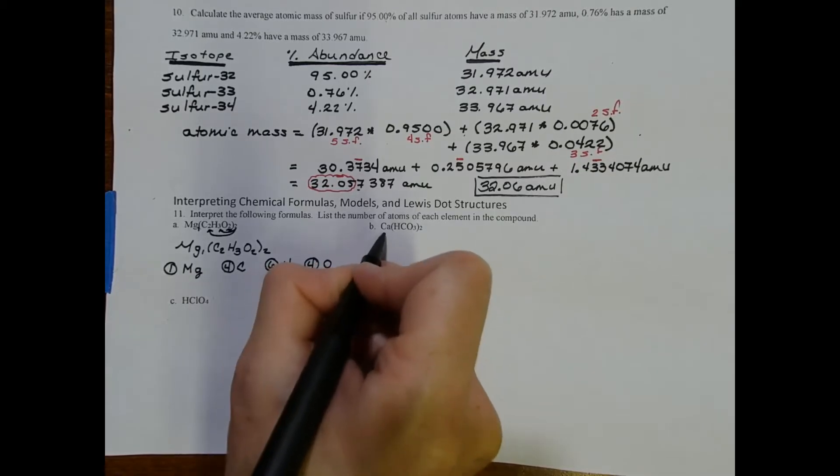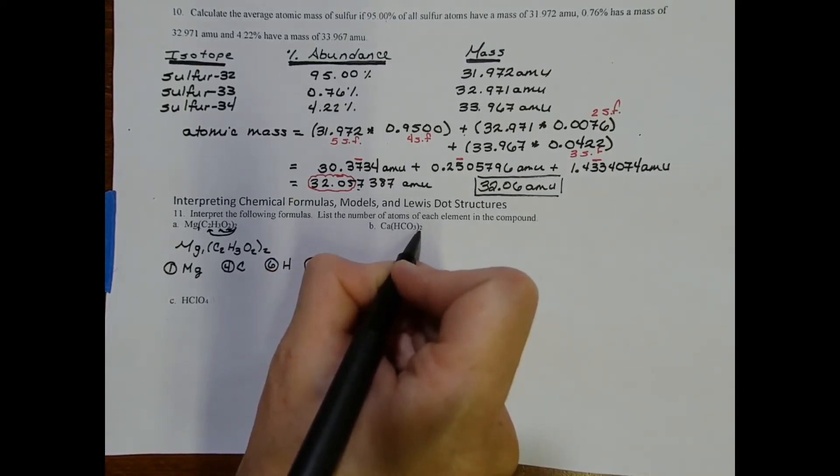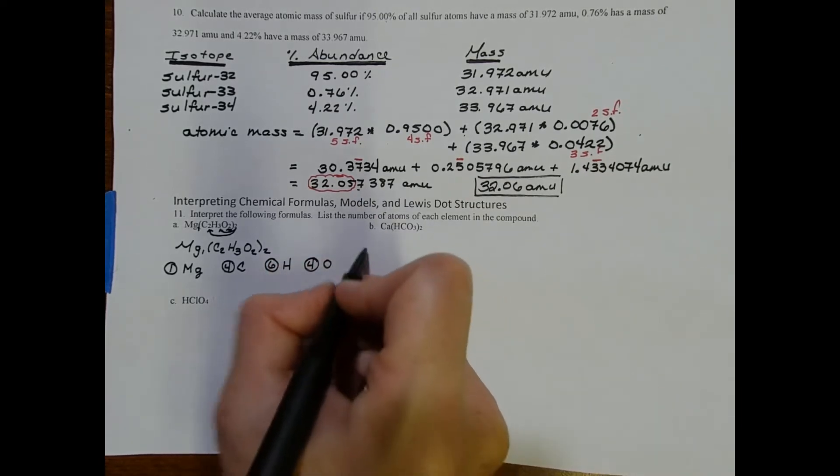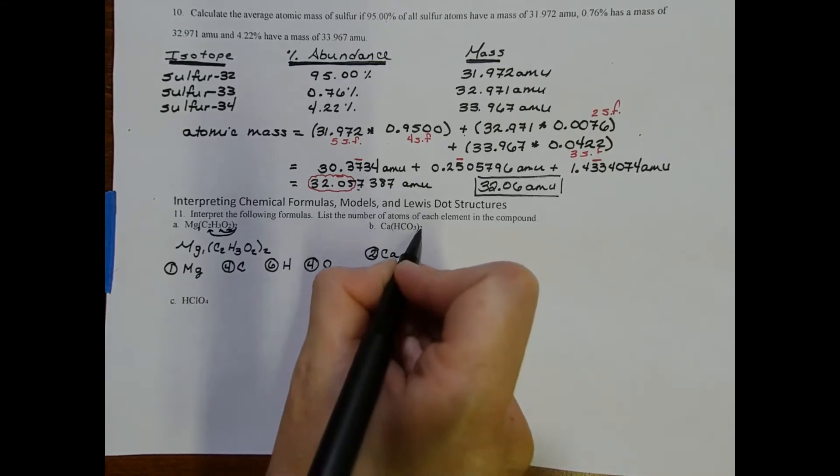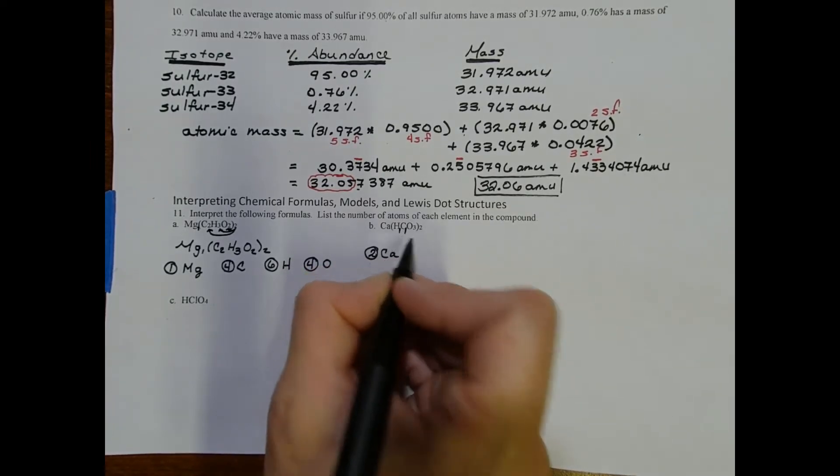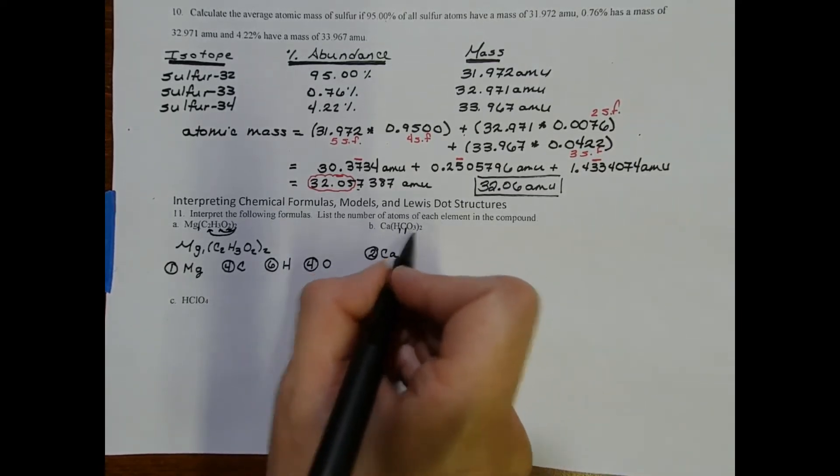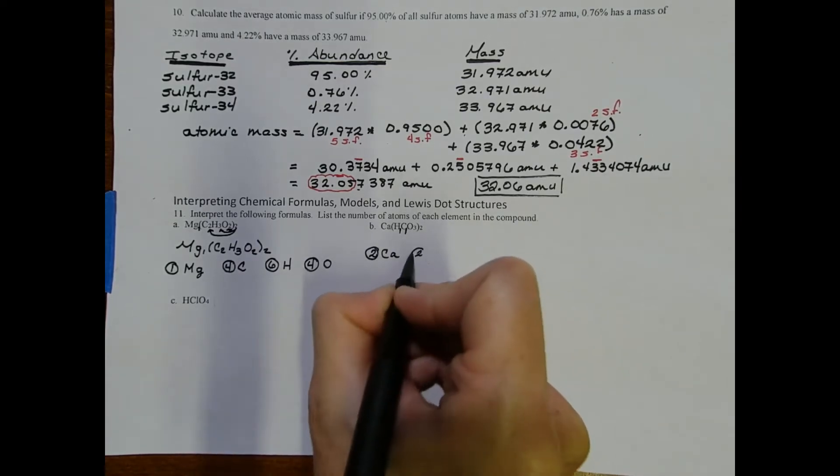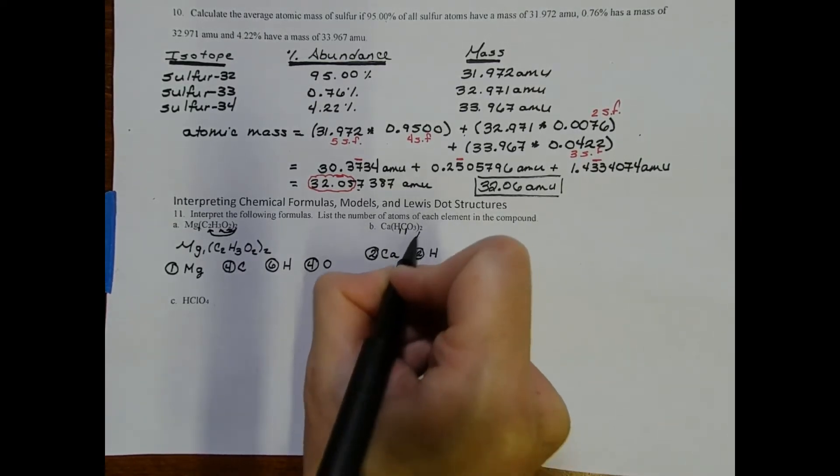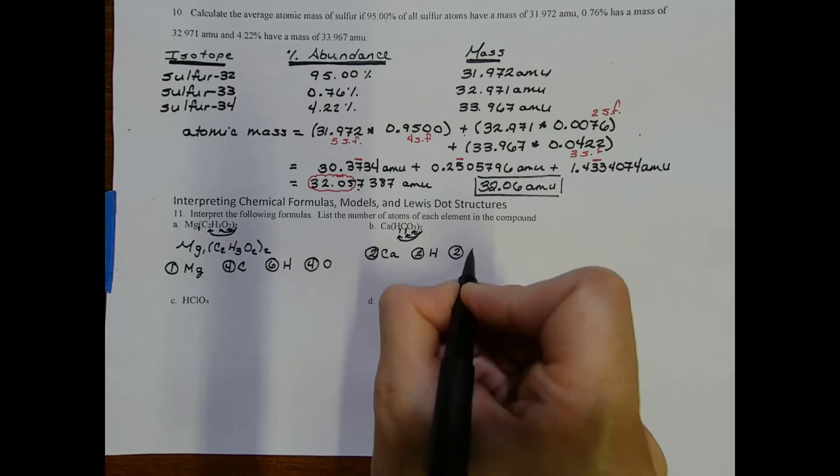For letter B, very similar situation. The calcium does not feel the 2 because the calcium is not inside the parentheses. So I have 2 atoms of calcium. Now in terms of the distribution, I'm actually distributing to these 1s that are understood. Chemists don't write the 1s. If you don't see a subscript, you're going to assume a 1. So we have 2 hydrogens after the distribution, 2 carbons, and 6 oxygen.